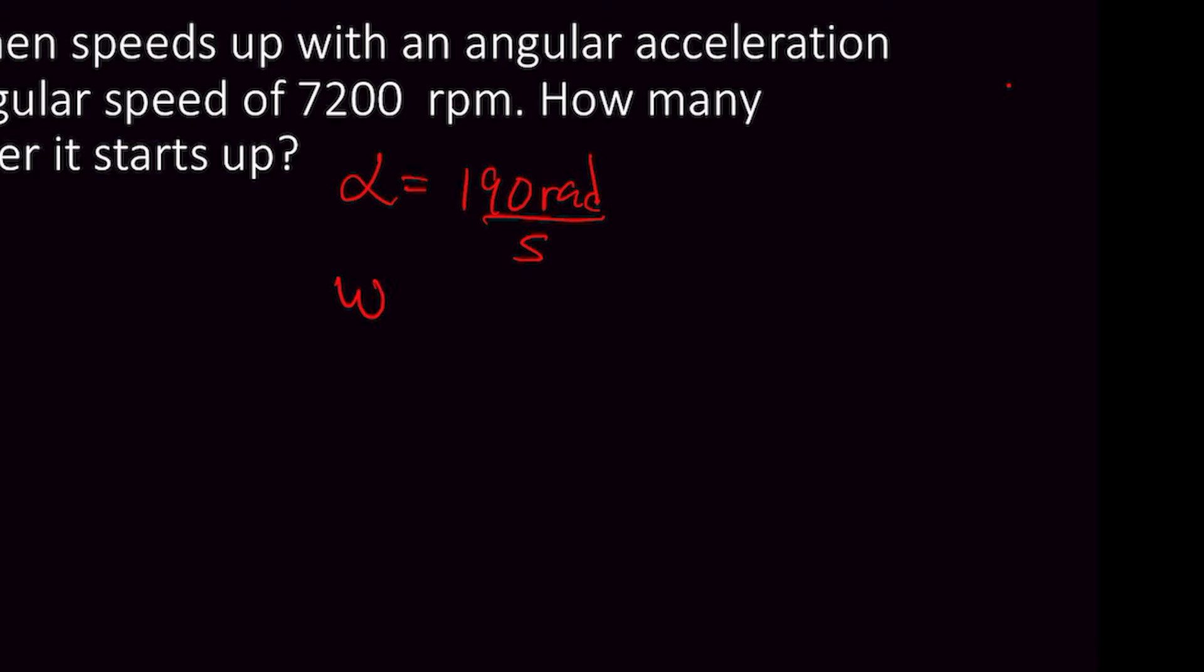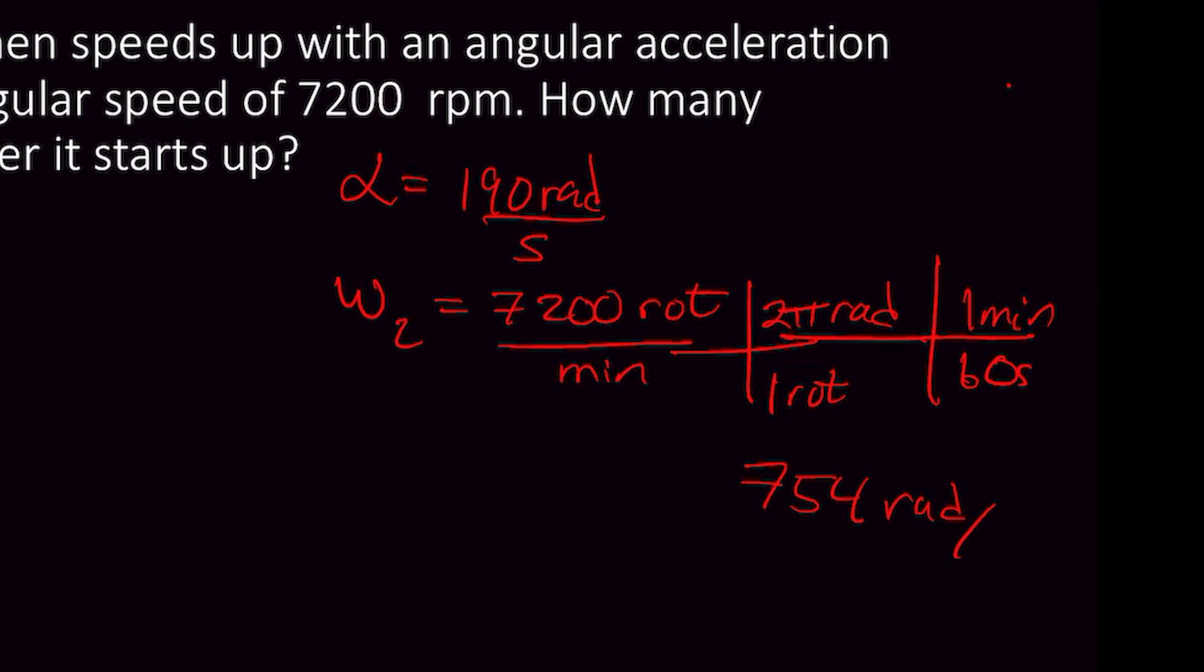And we've got an angular velocity, but it's a final velocity, I'll call it W2, of 7,200 rotations per minute. And I've got to convert these to like units, so I'm in rads per second. There is one rotation in 2π radians, and I've got to get the minutes to seconds. One minute is 60 seconds. So 7,200 times 2 times π, divide 60, gives me 754, and that will be in rads per second.